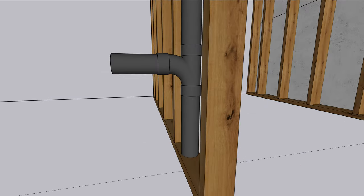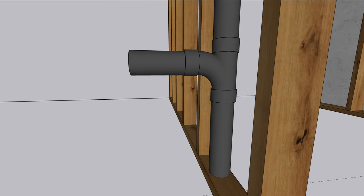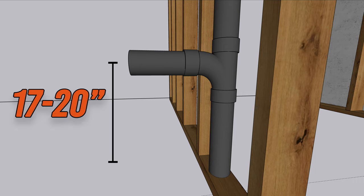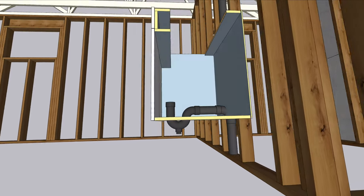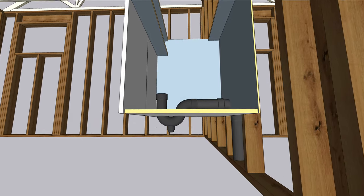Let's talk about rough-in dimensions now. Standard height for the sink arm drain is between 17 to 20 inches. However, you should always check your cabinet specifications to allow enough space below the P-trap U-bend.